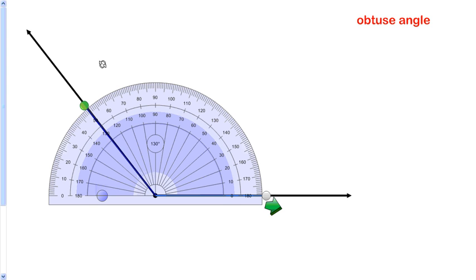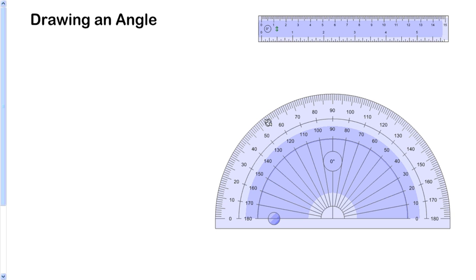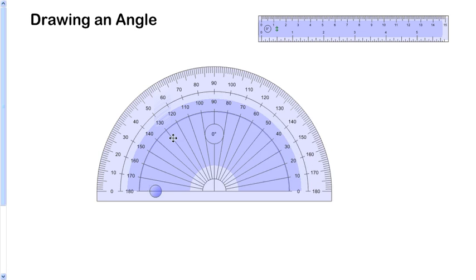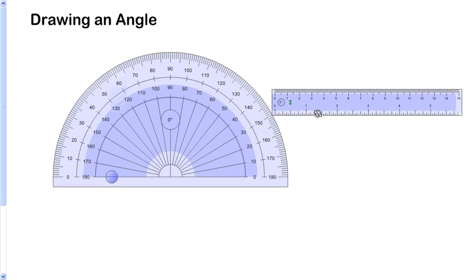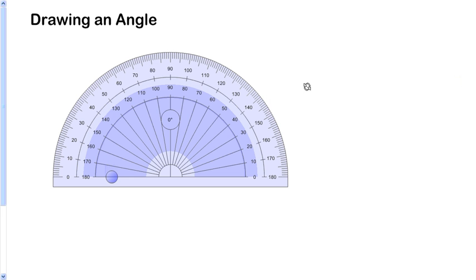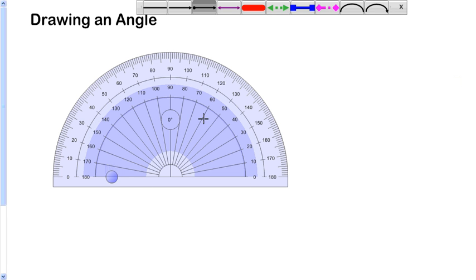Now drawing an angle is kind of fun. What you will probably want to have is the bottom of your protractor or a ruler, either of those would be fine. The bottom of your protractor works really nicely, so you're going to draw a ray along the bottom.